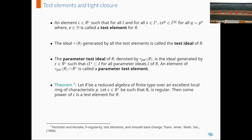The parameter test ideal of R is denoted by tau-pair R and is the ideal generated by all elements C in R-zero such that C times I-star is in I for all parameter ideals I of R. An element is said to be a parameter test element if it is in the parameter test ideal as well as in R-zero. Due to a result of Hochster-Huneke, we have existence of test elements in certain classes of rings, wherein the rings are reduced algebras of finite type over an excellent local ring of prime characteristic. If C is in R-zero such that R localized at C is regular, then some power of C is a test element for R.